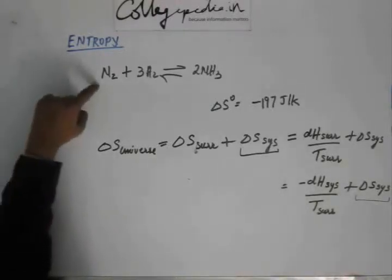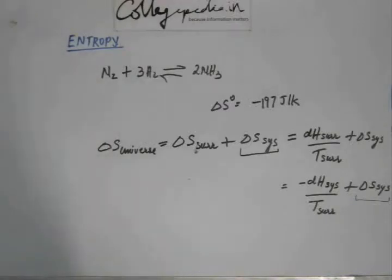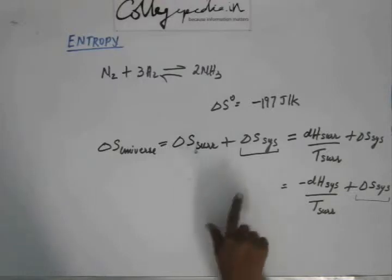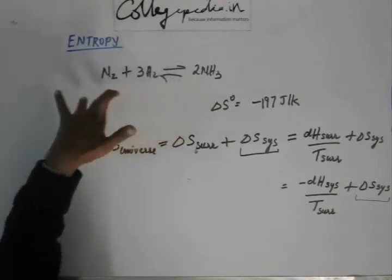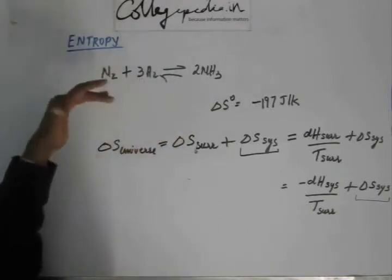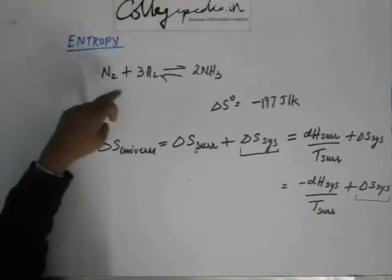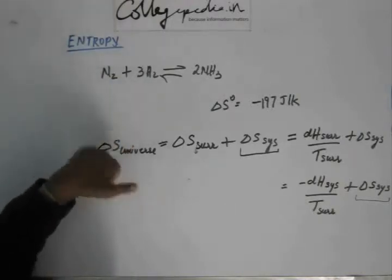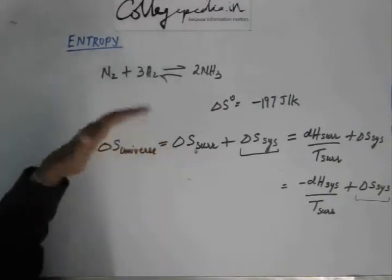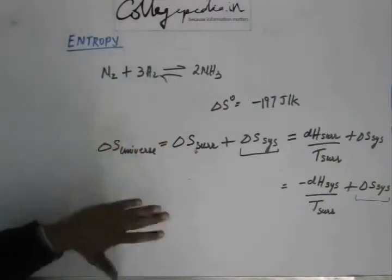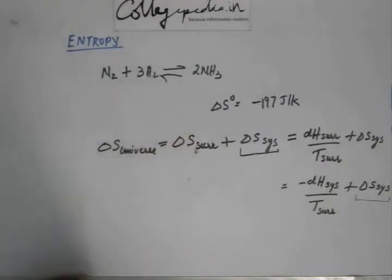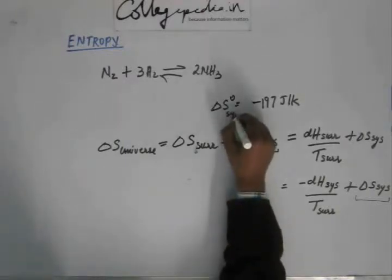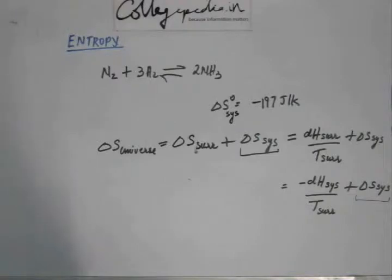To comment on the spontaneity of the reaction I have to look at delta S of surrounding and delta S of system. Delta S of system is calculated as delta S of products minus delta S of reactants. The data is given per mole, so for two moles of ammonia you multiply by two, and for hydrogen you multiply by three. Doing that, I get delta S of system as minus 177 joule per kelvin.